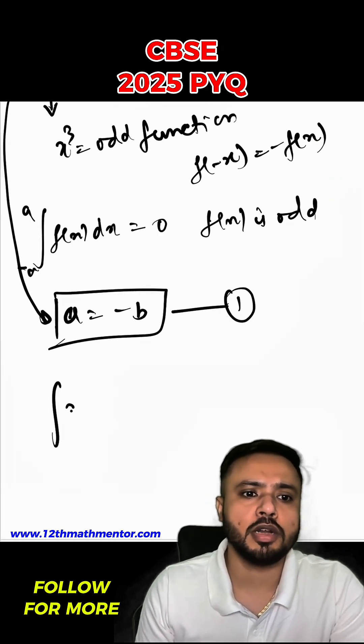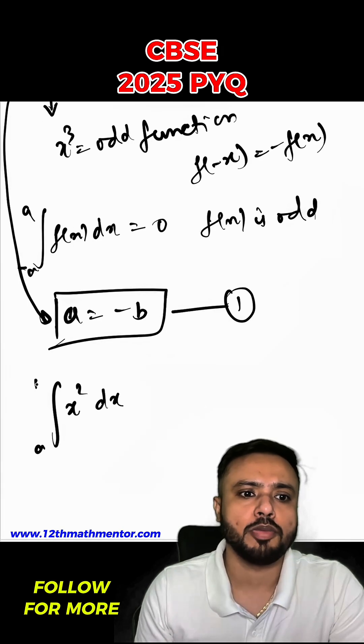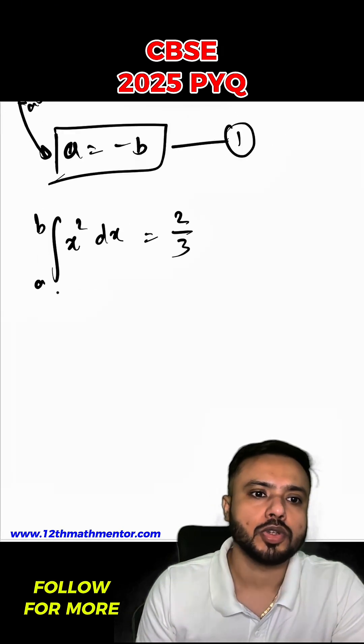This is my first equation and the second integral which is given to us which is x² dx from a to b is equal to 2/3. So now I will solve this integral.